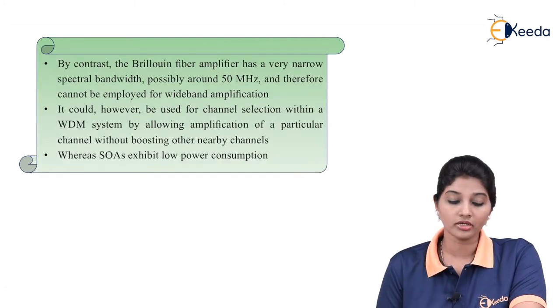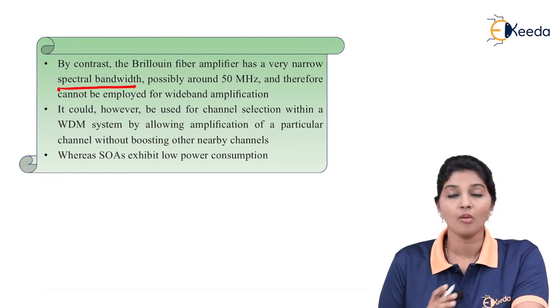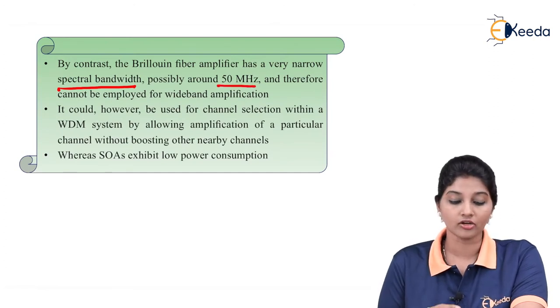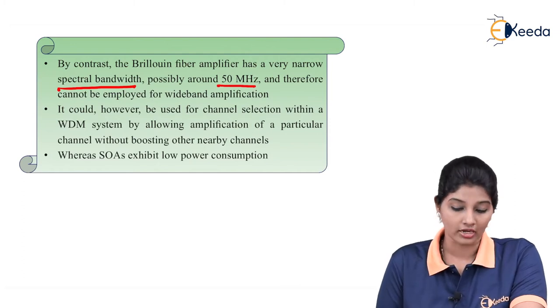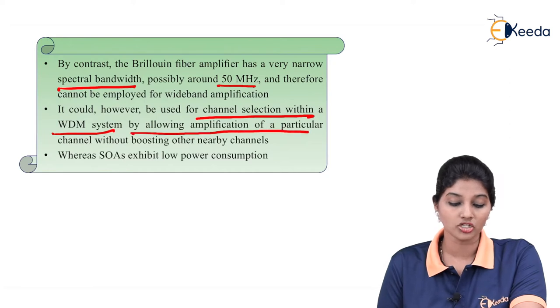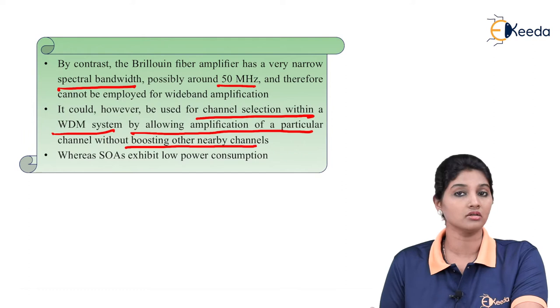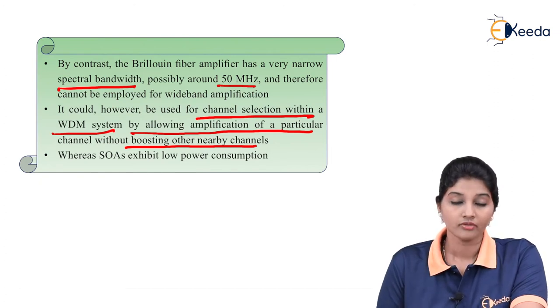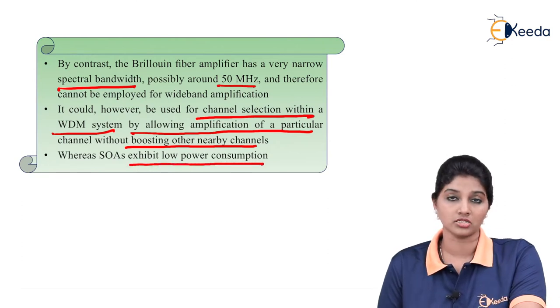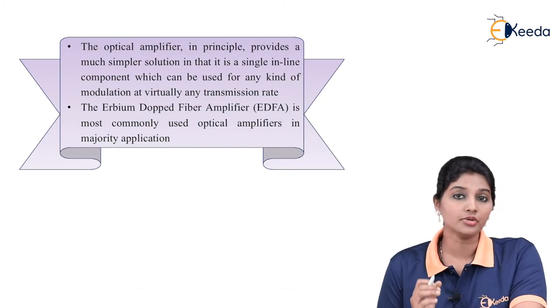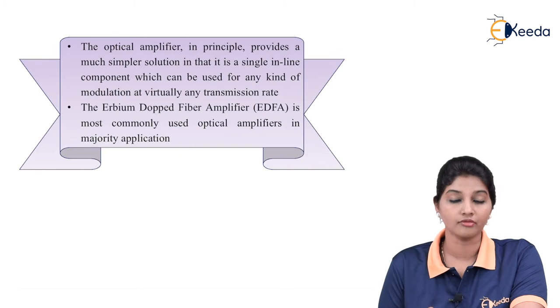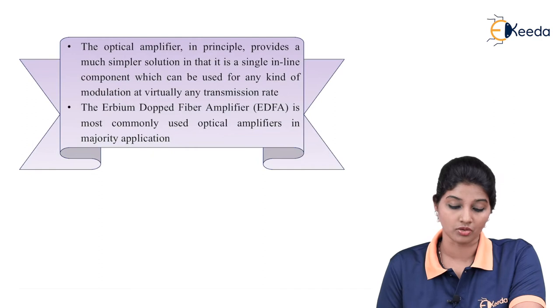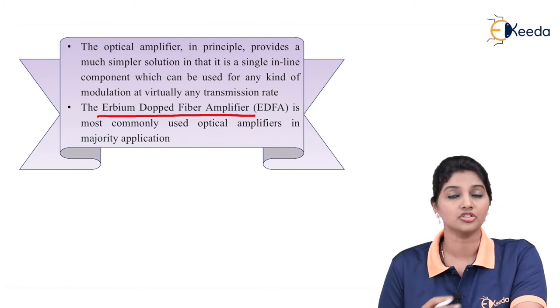By contrast, the Brillouin optical fiber amplifier provides a very narrow spectral bandwidth, possibly around 50 MHz, and therefore cannot be used for a wide spectrum. It could, however, be used for channel selection within a WDM system by allowing amplification of a particular channel without boosting other nearby channels. Where narrow bandwidth is important, we can use a Brillouin fiber amplifier. The SOA exhibits low power consumption compared to other types. The EDFA — Erbium doped fiber amplifier — is the most commonly used optical amplifier in the majority of applications.